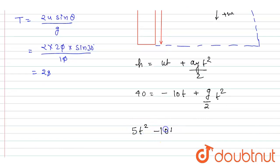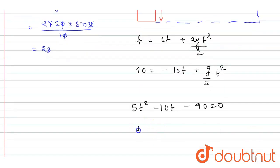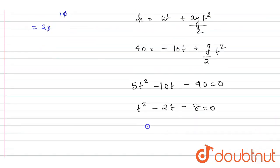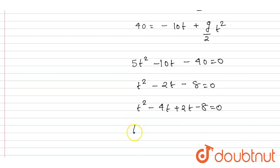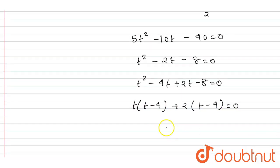5t² minus 10t minus 40 equals 0. Divide this by 5, you will get t² minus 2t minus 8 equals 0. Now I can write down this equation as t² minus 2t minus 8 equals 0. Now if you take t common here, I will write t into plus, and plus 2t minus 4 equals 0. So you'll get t equals minus 2 and t equals 4 seconds.